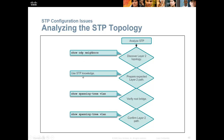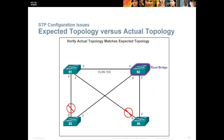Expected topology versus actual topology: when you look at the actual topology, all the links are there. The expected topology — if S2 is the root bridge for VLAN 100 — shows which disabled ports spanning tree has shut off. You'll never go from S1 to S3 the long way; you'll always use the direct connection. If a link goes down, spanning tree will use BPDUs to bring the disabled link back up and reroute the data. Because the disabled port is still listening for BPDUs, it knows when to come back up, and most of the time the end user doesn't even know what happened.